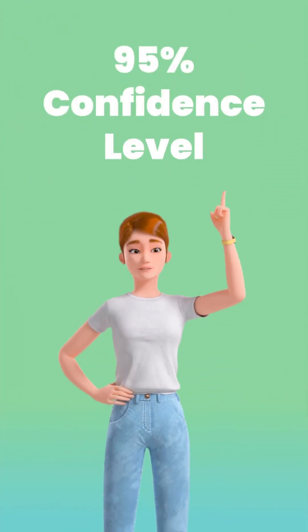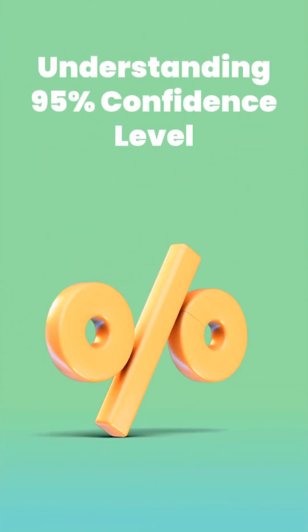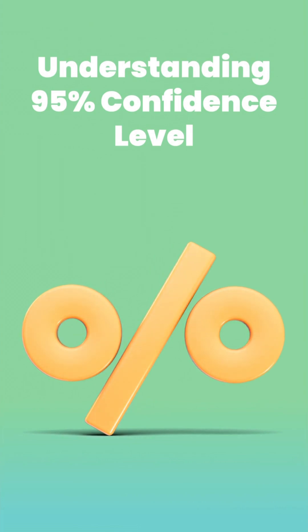Most of the time, we use a 95% confidence level. That means if we repeated the study 100 times, about 95 of those intervals would contain the true population value.